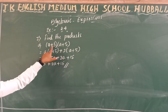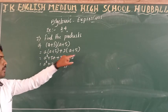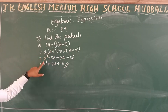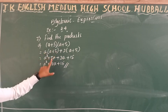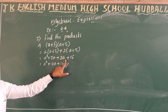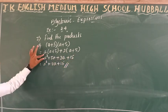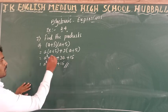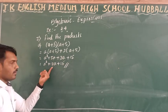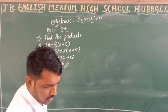Next step: plus sign, then 3, then (a + 5). Multiply: a into a gives a squared, a into 5 gives 5a; 3 into a gives 3a, 3 into 5 gives 15. So a squared, then 5a plus 3a equals 8a, then plus 15. This is the answer for question one.